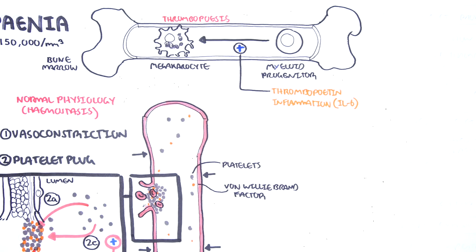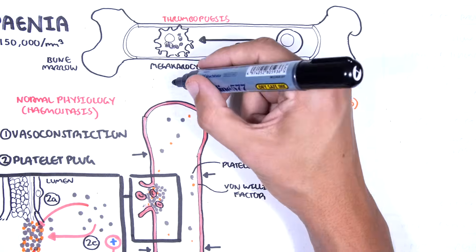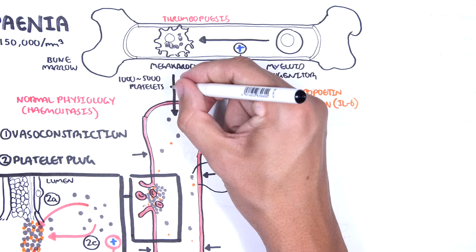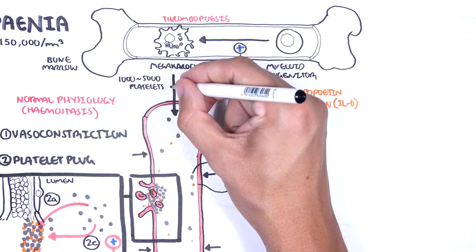When the megakaryocytes are formed in the bone marrow, eventually they will release and produce each about 1,000 to 5,000 platelets.